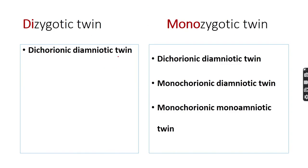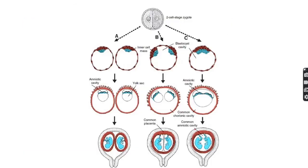These three patterns of twin pregnancy may occur. In dizygotic twins, two separate ova are fertilized by two sperm, so two zygotes are formed, producing two blastocysts. This is seen in dichorionic twin pregnancy.